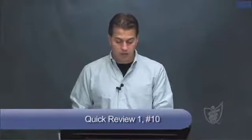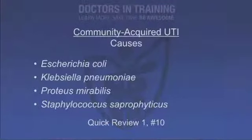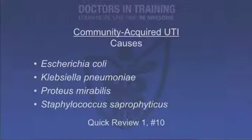Question 10: What organisms most commonly cause urinary tract infections? For community-acquired UTIs, there are four organisms to know: E. coli — by far the number one cause at about 80% of UTIs — Klebsiella pneumoniae, Proteus mirabilis, and Staphylococcus saprophyticus. These are the main community organisms, though many others can cause UTIs.